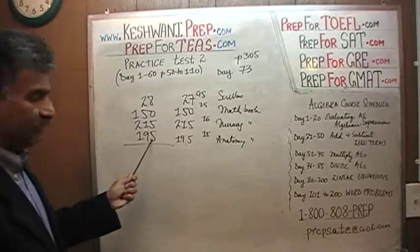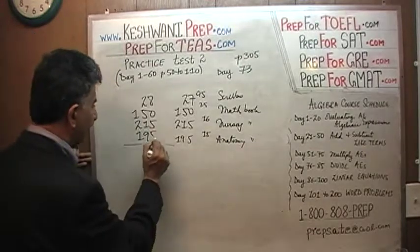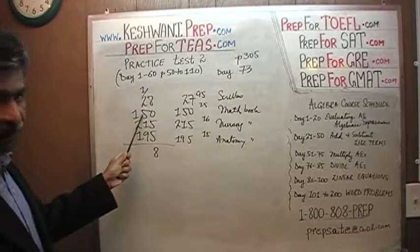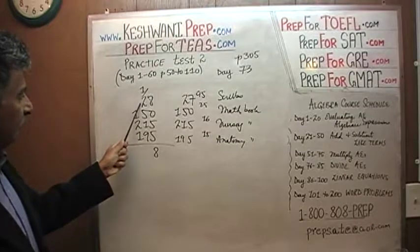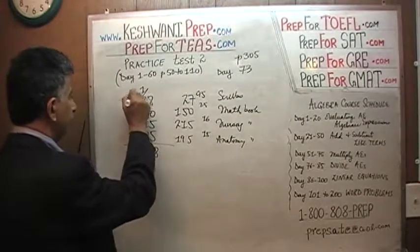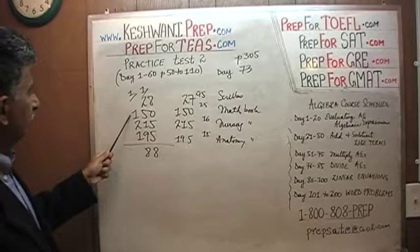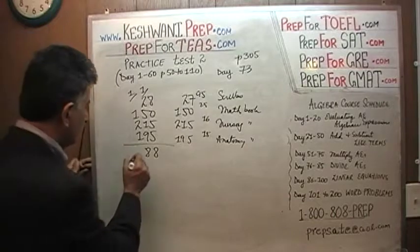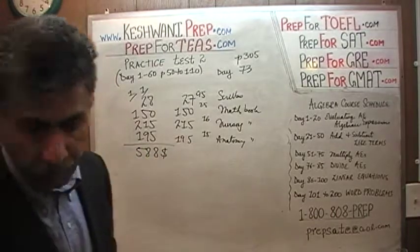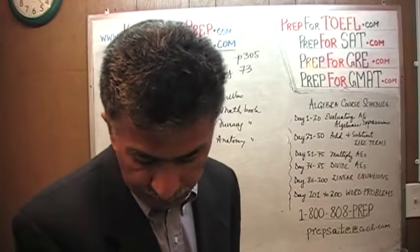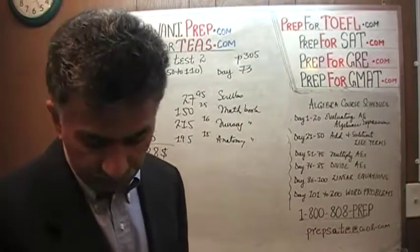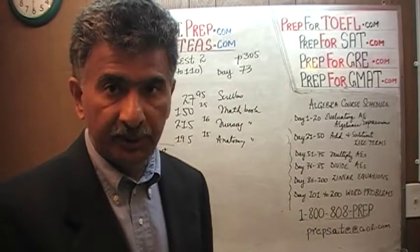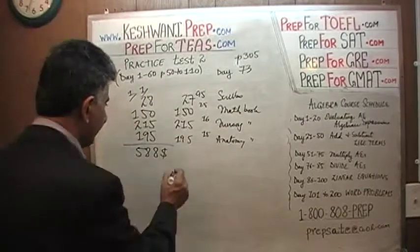Let's add them up. 5 plus 5 is 10, plus 8 is 18 — write 8, carry 1. 9 plus 1 is 10, plus 5 is 15, plus 1 is 16, plus 2 is 18 — write 8, carry 1. Then 1 plus 2 plus 4 plus 5 gives us 5. So we get a total of $588. We look at the answer choices and pick the one closest to it. The first answer is 580, the next is 700 — 580 is the closest. The answer is A.